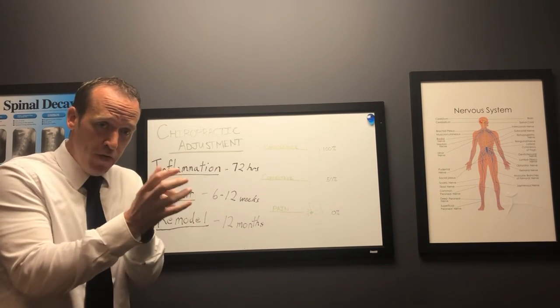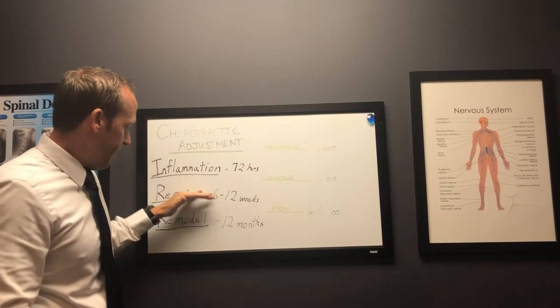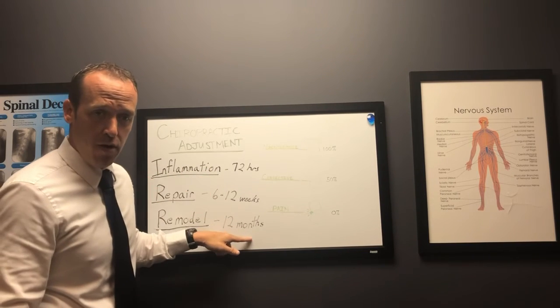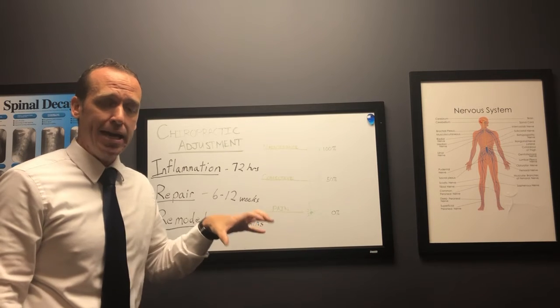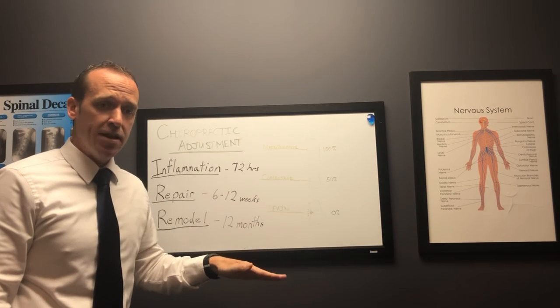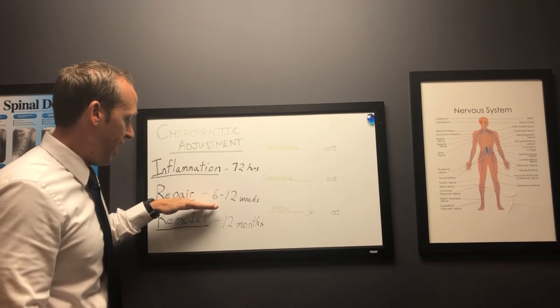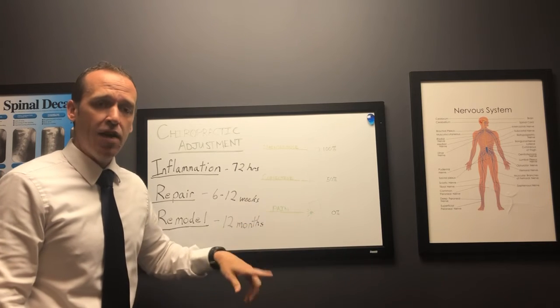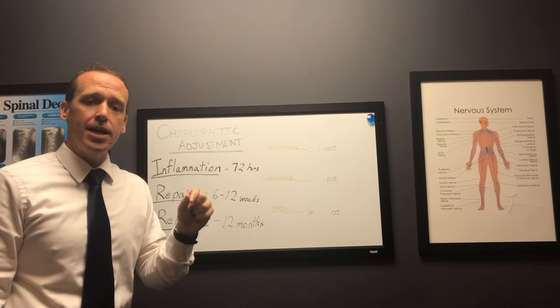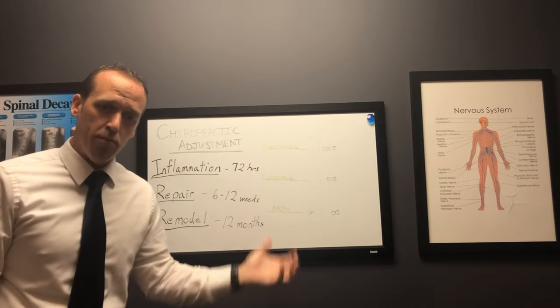the actual synovial joint moving, popping, and mobility, then it will heal wrong. And this is why we have so many back pain failures. Because they went through this phase and they healed wrong. And now they have scar tissue, tissue that cannot fully get back to normal.